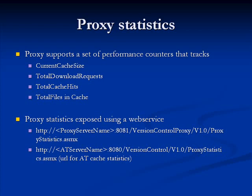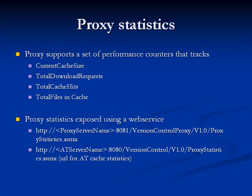These counters work as follows: if you place a new download request, we increment the download request counter. If it's a cache hit, we increment the cache hit counter. If it's a cache miss, the moment we add a new file we increment both the number of files in the cache and the current cache size. When we kick off the cache cleanup, we decrement the current cache size and decrement the number of files as well.